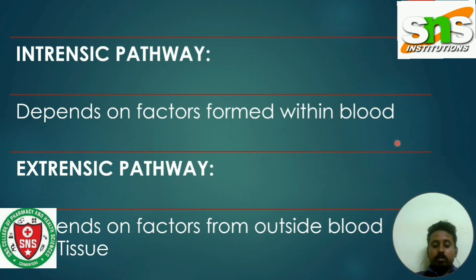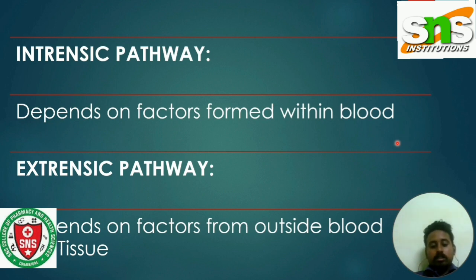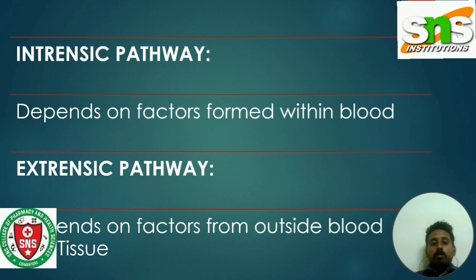The extrinsic pathway results in the initiation of prothrombinase, which converts prothrombin to thrombin. Tissue factor is inactive intravascularly, but upon tissue trauma, tissue factor released by damaged tissue cells enters the blood where it activates factor eight in the presence of calcium. This tissue factor-8a complex activates factor ten, and the activated factor ten combines with factor five to result in the formation of prothrombinase.